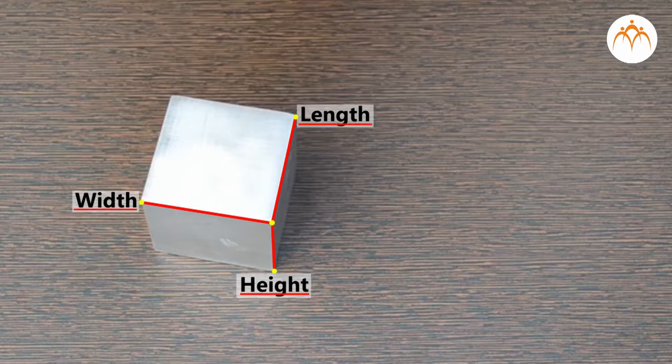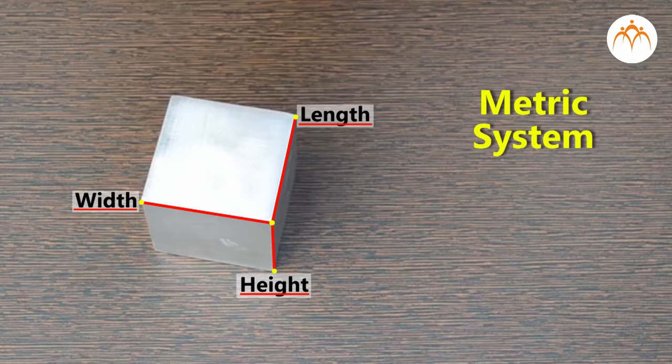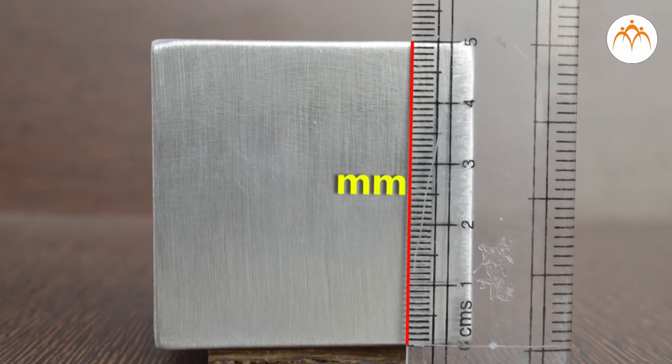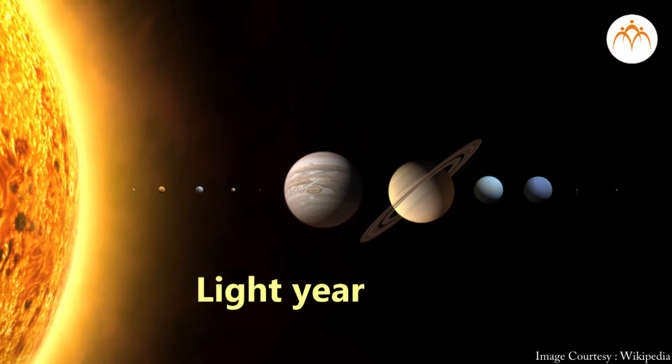These units are part of the metric system, which uses powers of 10 to relate quantities. This allows us to measure the vast ranges encountered in nature like millimeter to measure small distances and light year to measure very huge distances.